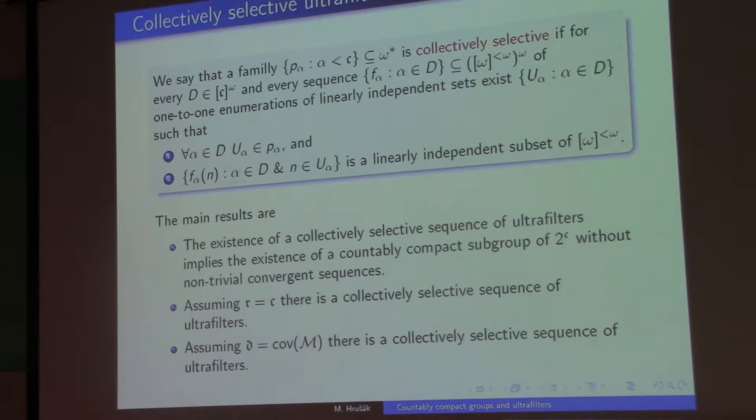So among the standard models, there is only the Miller model, which happens to be the model of near coherence of filters. And actually, both constructions that I have for these, under these assumptions, violate near coherence of filters. I need failure of near coherence of filters.